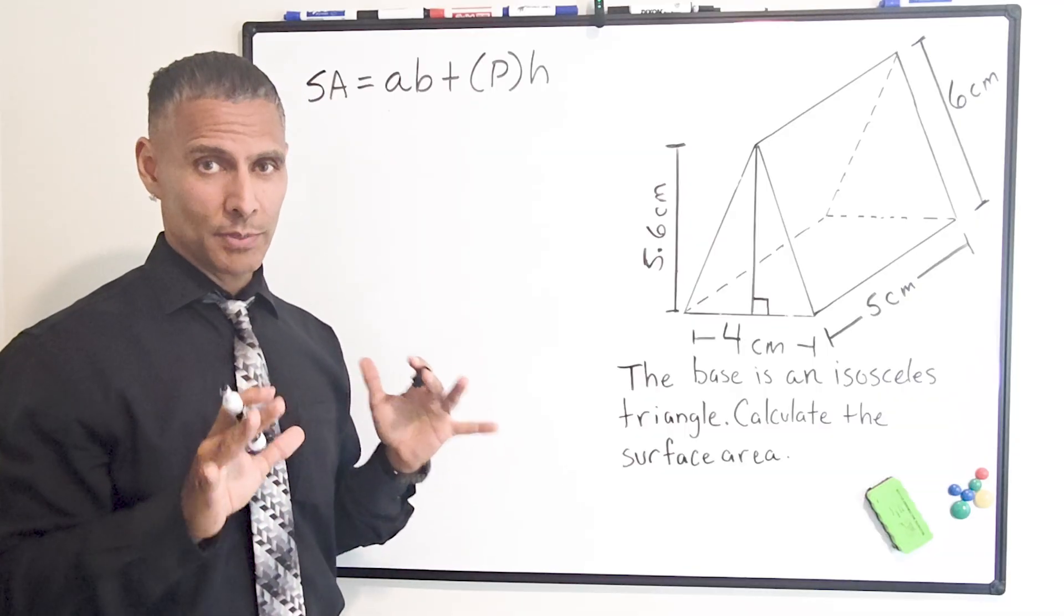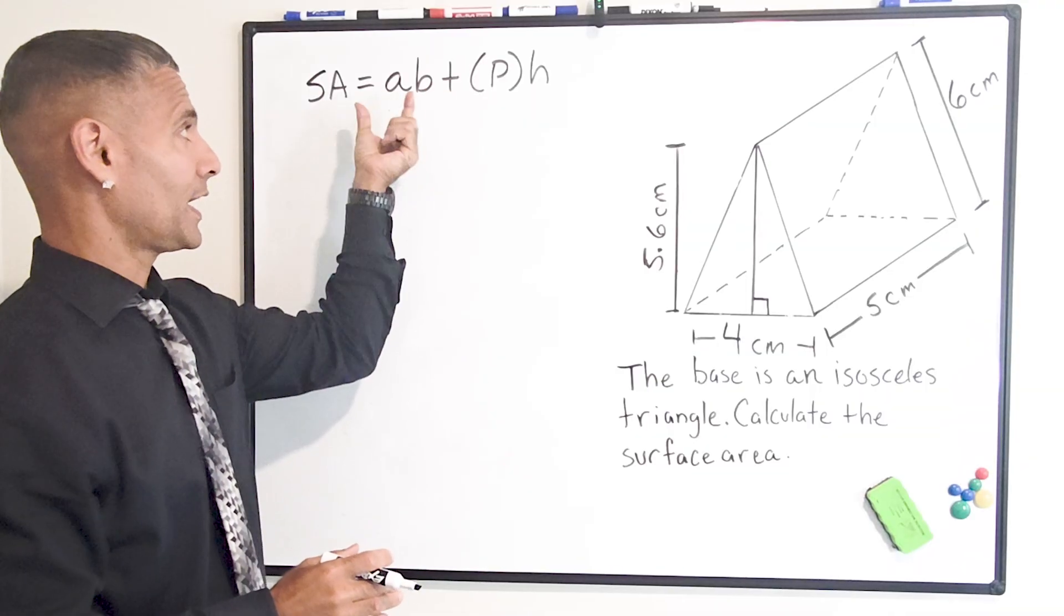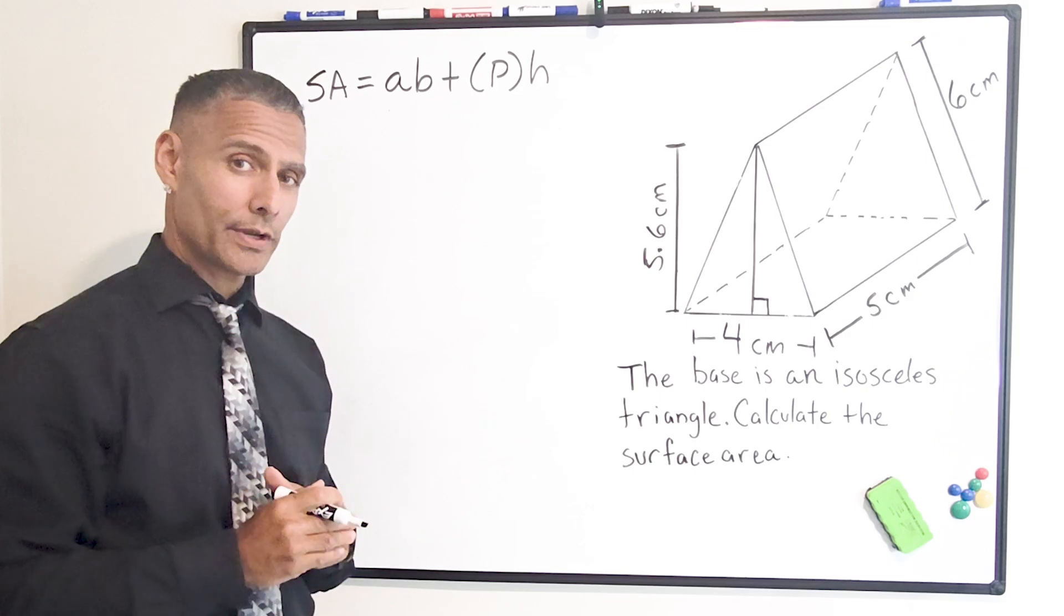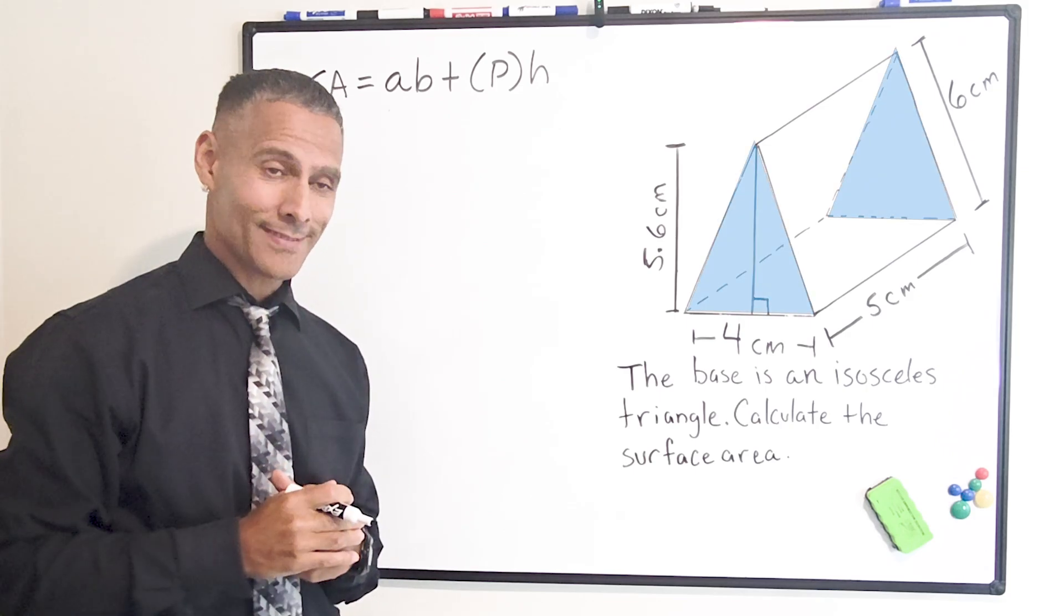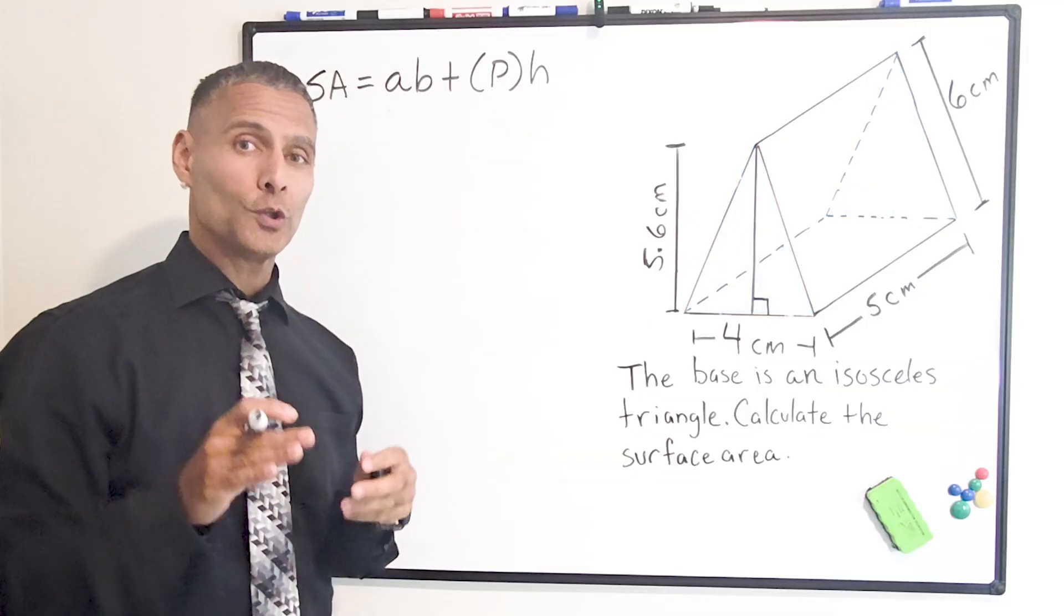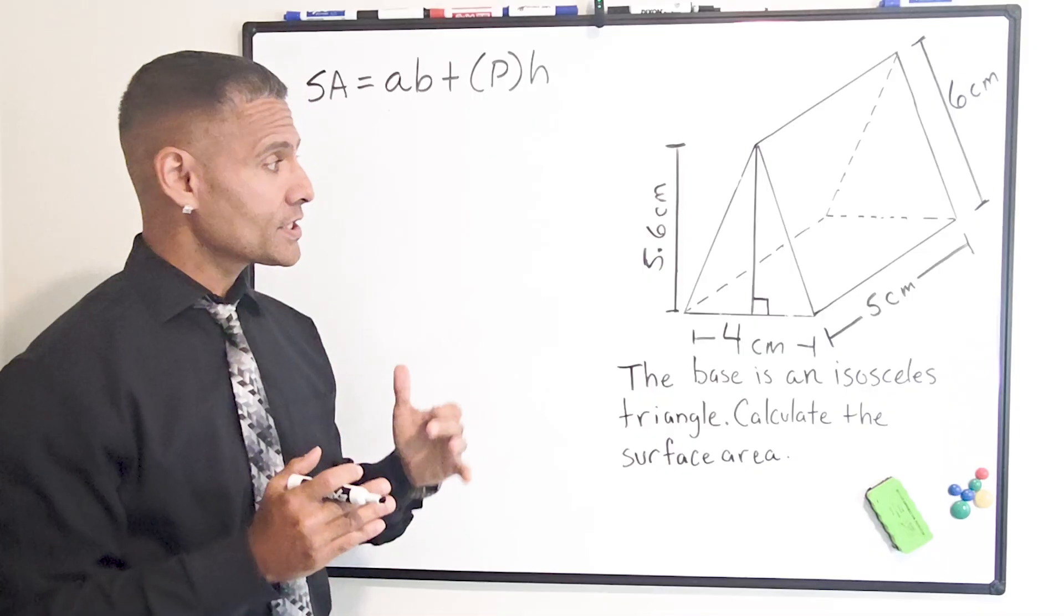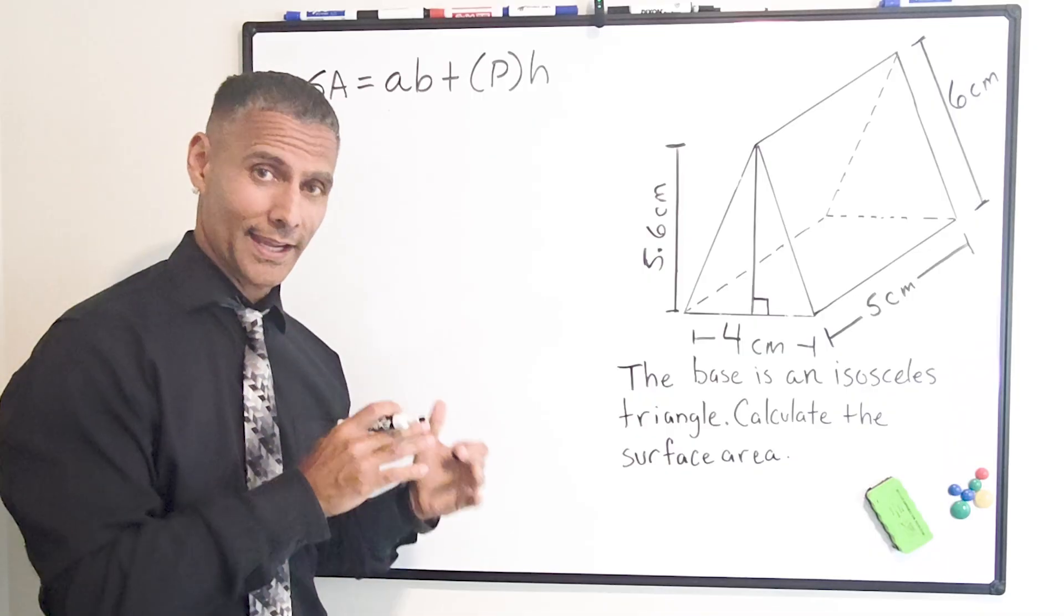So let me explain each piece of this formula. Now, the portion before this plus sign here is going to give us a total area of the two congruent triangular faces, and this part after the plus sign is going to calculate our lateral area, which just means the sides of our prism, which is composed of three rectangular surfaces.